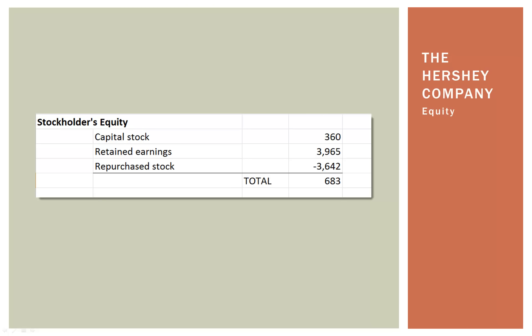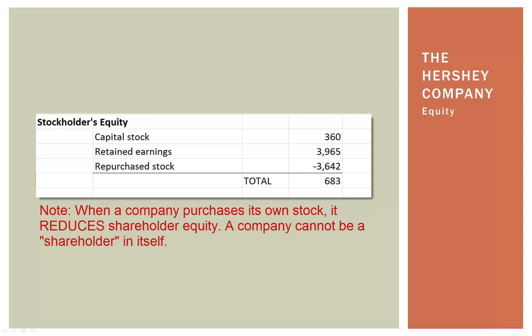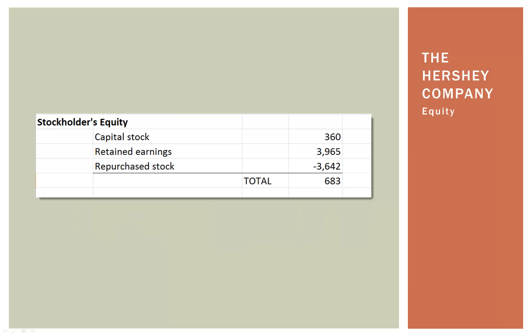Then we have stockholders' equity. Capital stock is the stock of the Hershey Company. Retained earnings — remember from the earnings statement, if the company does not pay out its earnings in dividends, it keeps those earnings to use inside the company. And then there's repurchased stock: companies will sometimes buy their own stock from the market because they think it's undervalued, and when the price goes up they can put it back out. Sometimes companies buy stock to fund employee stock programs, since many executives are paid partly in stock. That is the stockholders' equity part of the balance sheet.